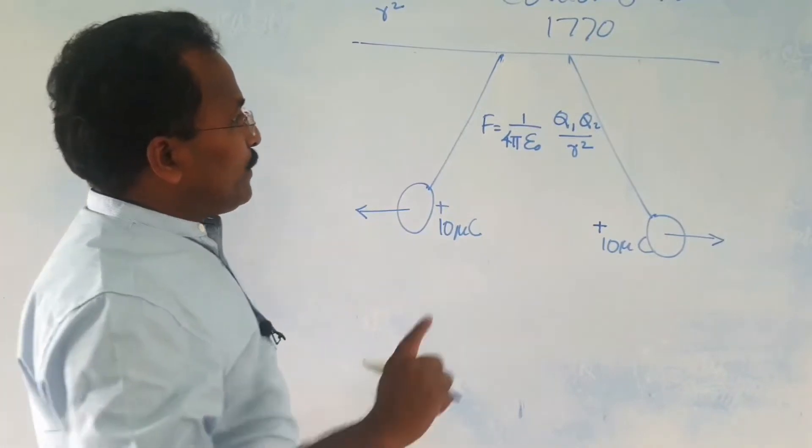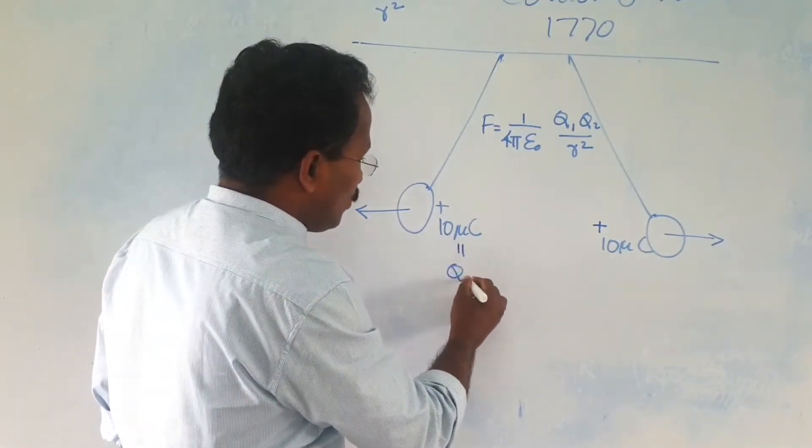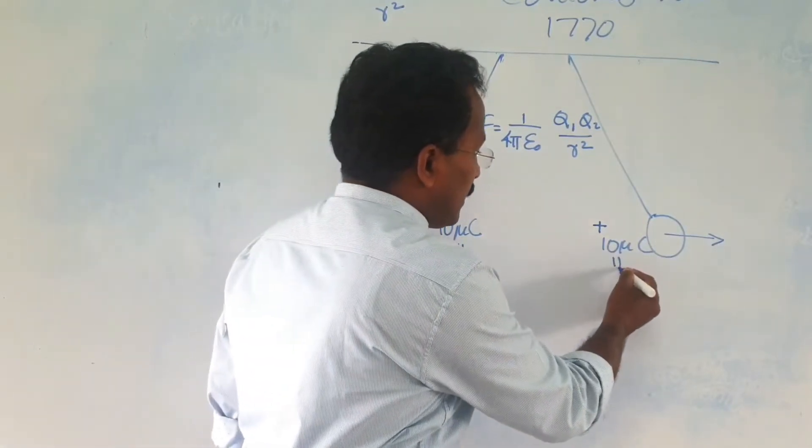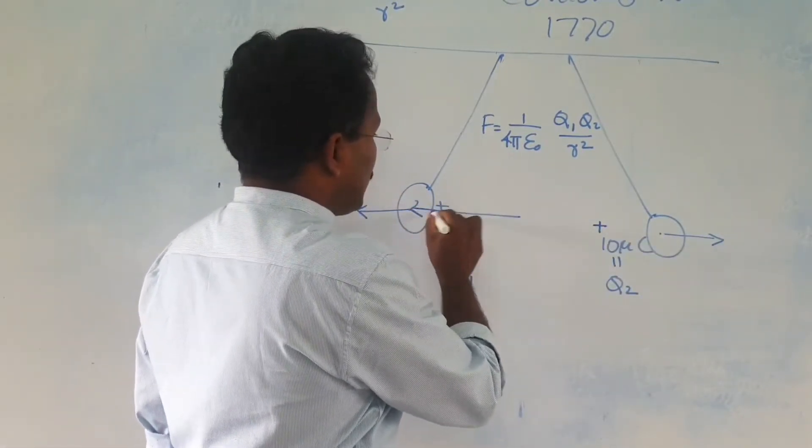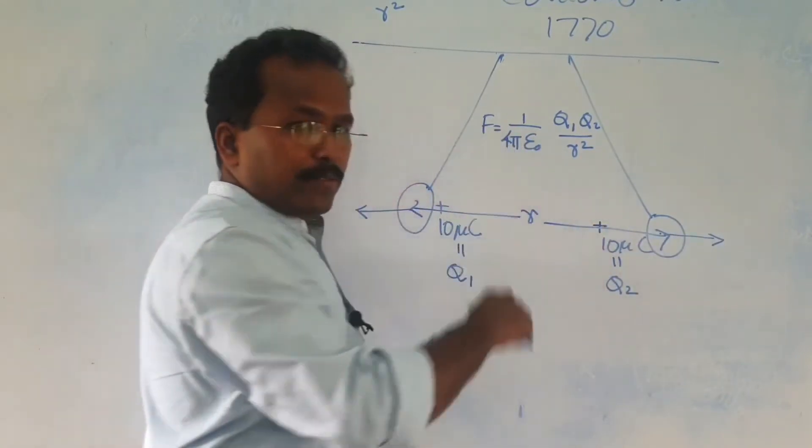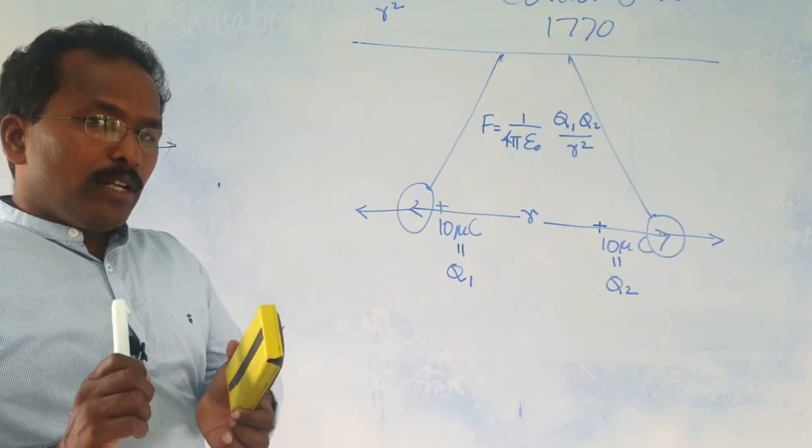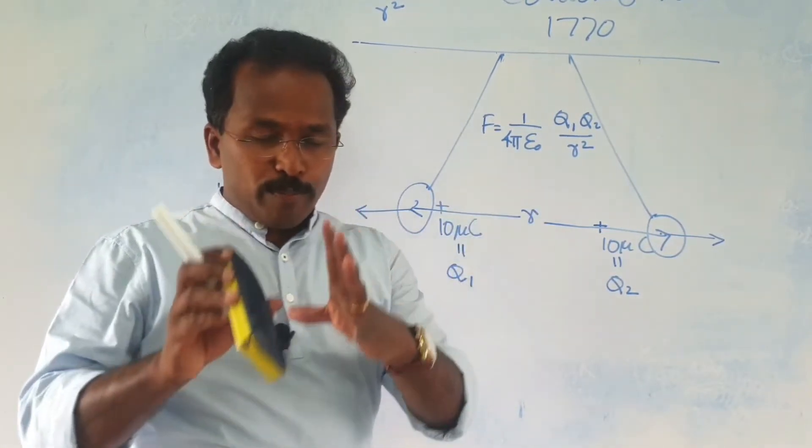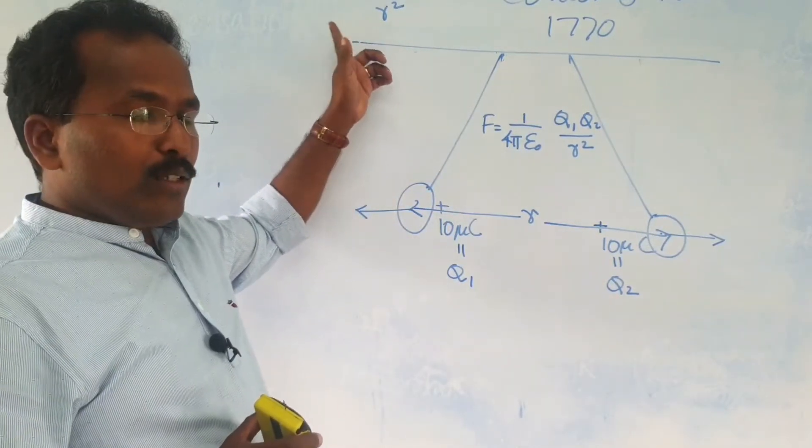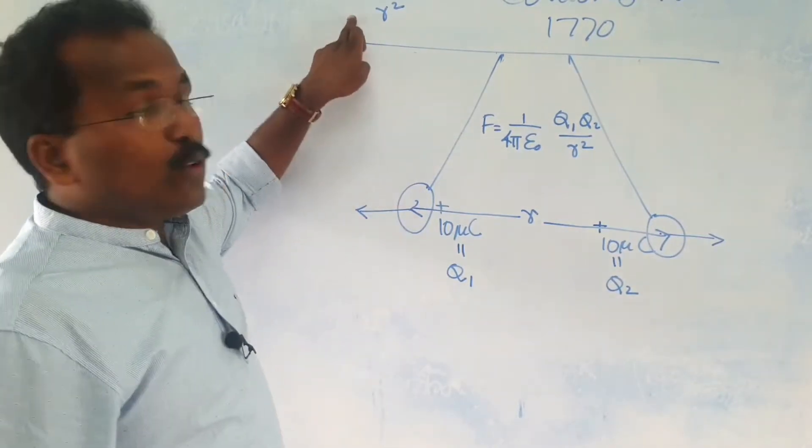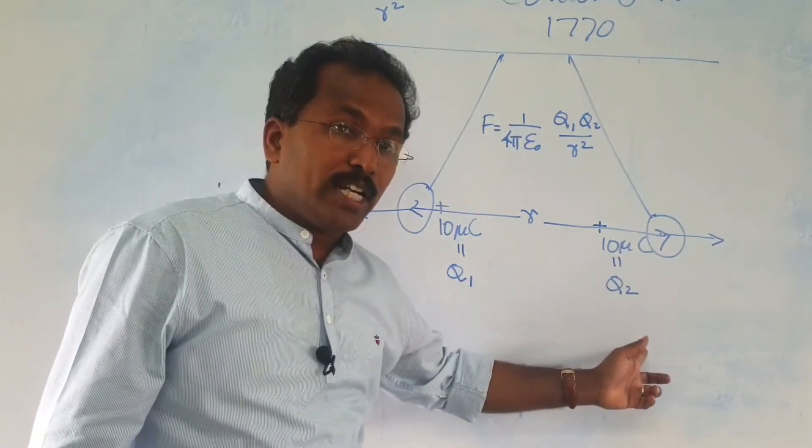This much is a constant into q1, q2 divided by r square. I hope you can recollect from the last class, q is the charge, symbol for charge. This is taken as q1, the charge on the first body. This is taken as q2, charge on the second body. And the distance between the bodies, this distance is taken as r appearing here and this is a constant. Sounds exactly like Newton's law. There is a big difference here. Here you have only attraction, but it can be attraction or repulsion depending on the nature of the charges q1 and q2.